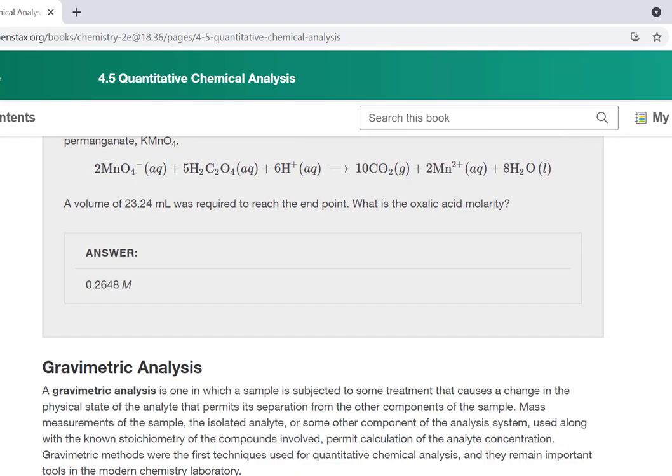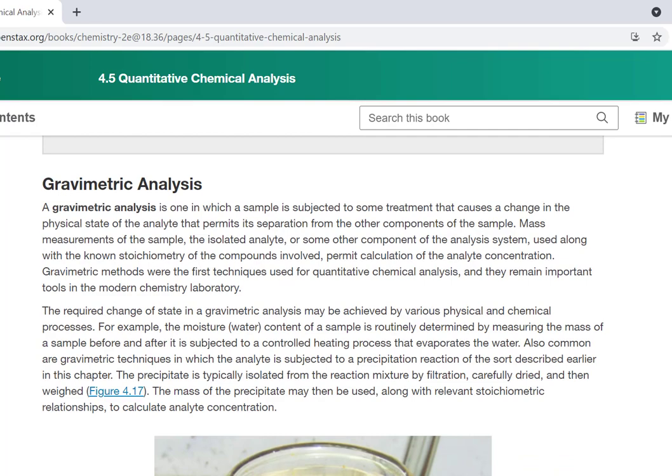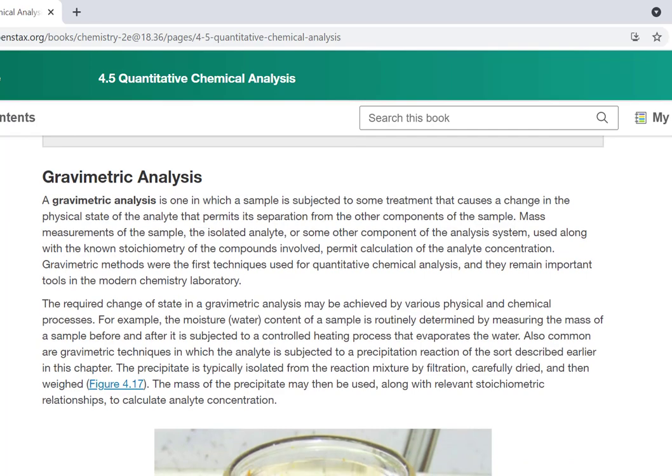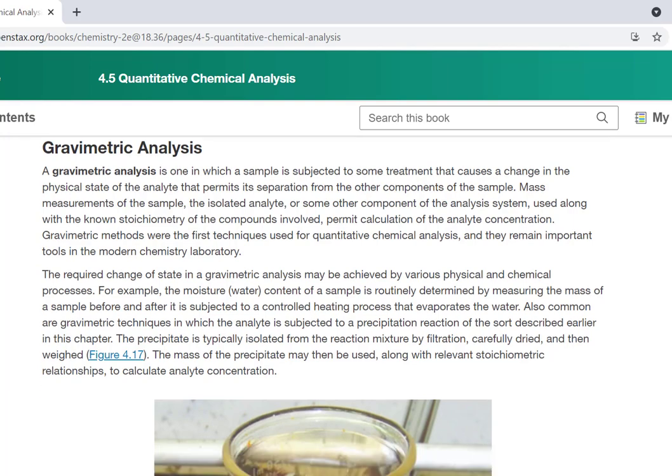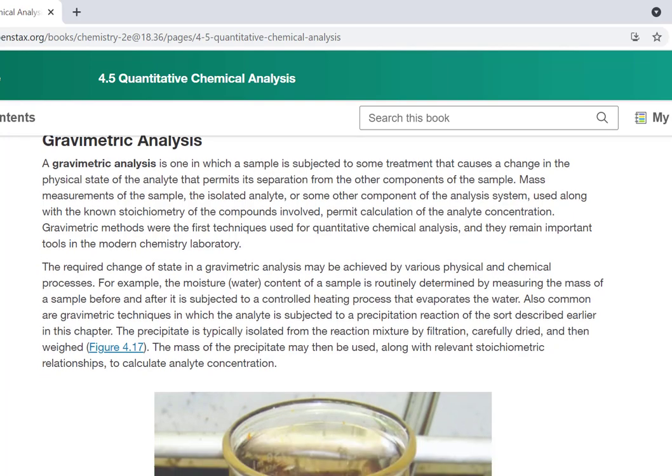So that's an example of a titration question. We can also have what's called the gravimetric analysis. In a gravimetric analysis, you will have some change of state such that you end up with typically a solid that you can isolate, and by finding the mass of that solid, maybe figure out some things that happen.